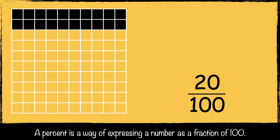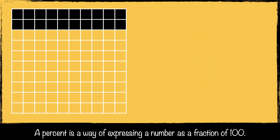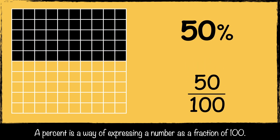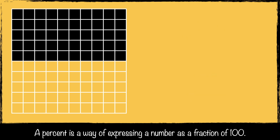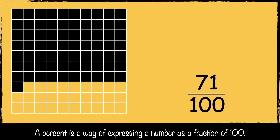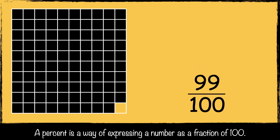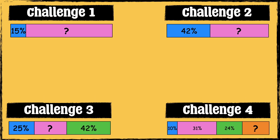So 20 parts out of a hundred means 20%, 50 parts out of a hundred means 50%, 71 parts out of a hundred means 71%, and 99 parts out of a hundred means 99%. I'm going to go through four missing percentage challenges. If you'd like to have a go yourself first, pause the video and press play when you're ready.